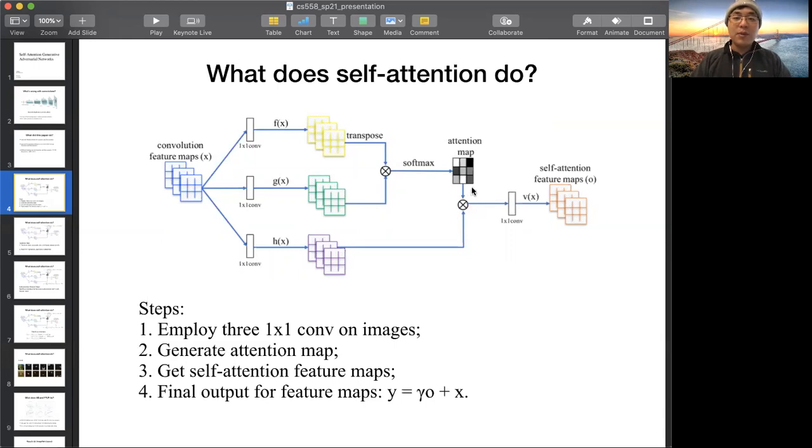Here, I want to get the distance among pixels. Then, it multiplies the attention maps and further results to get the self-attention feature maps. Finally, it will times the learnable parameter gamma to the output, and then add the input.